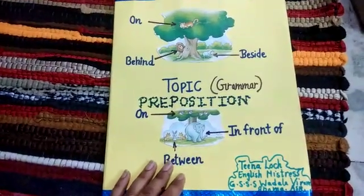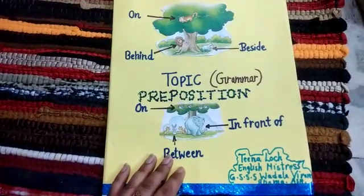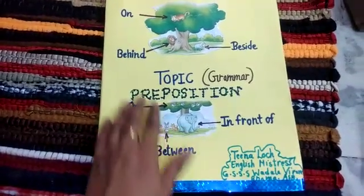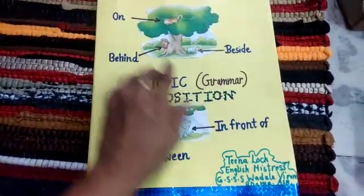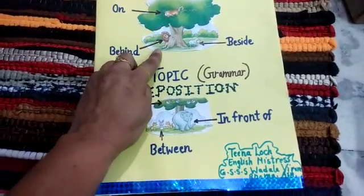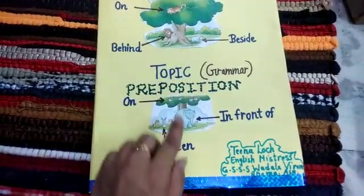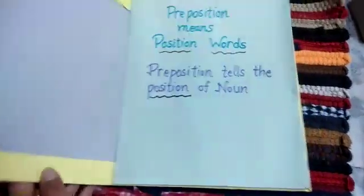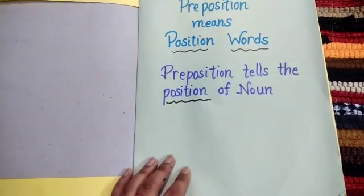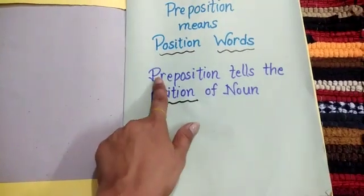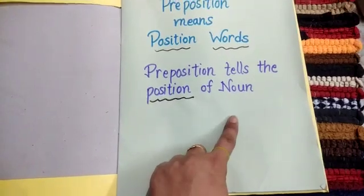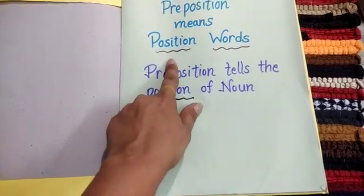Students, you can see, today our topic is preposition. Preposition means, as you see in the picture, it clarifies the position of the nouns. It is a definition of preposition. Preposition tells the position of the noun. So we called it position words.